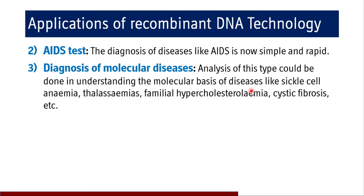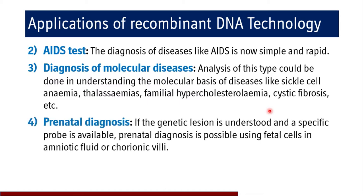Recombinant DNA technology has applications in the diagnosis of molecular diseases. It allows us to understand the molecular basis of diseases like sickle cell anemia and thalassemia — going beyond clinical manifestations to find solutions with better therapeutic responses. Conditions such as familial hypercholesterolemia and cystic fibrosis may be addressed through gene therapy, hormone supplementation, or enzyme supplementation to alleviate symptoms.